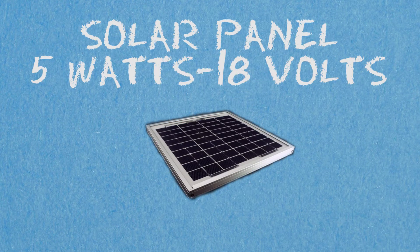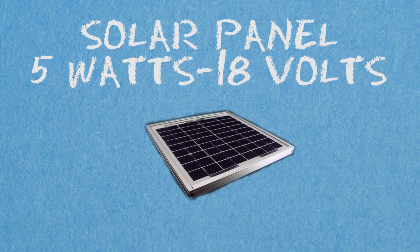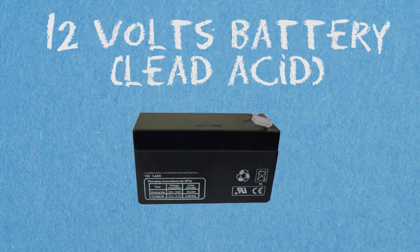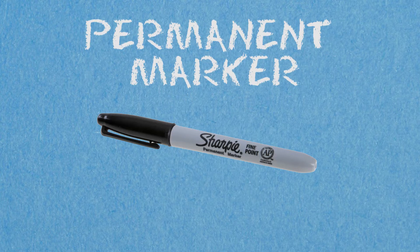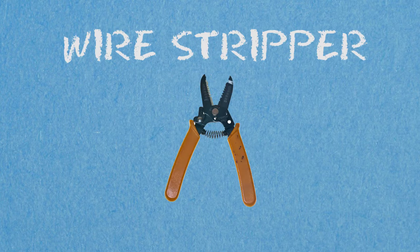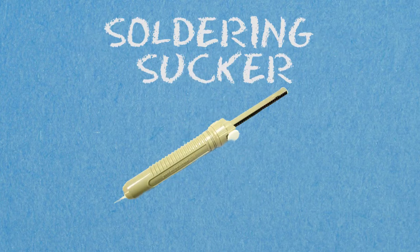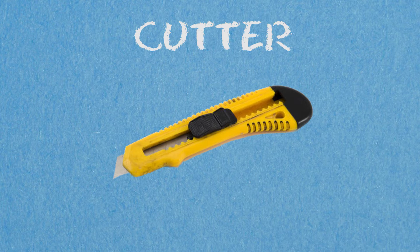Additionally, we have a 5 watt 18 volt solar panel, 12 volt lead acid battery, a marker to draw the circuit, wire stripper, desoldering sucker, and a cutter to shape the PCB to the size we want.